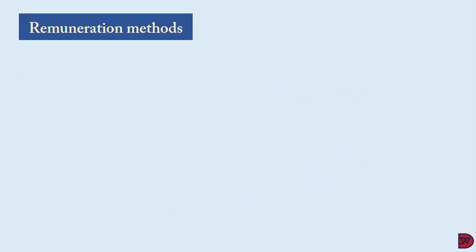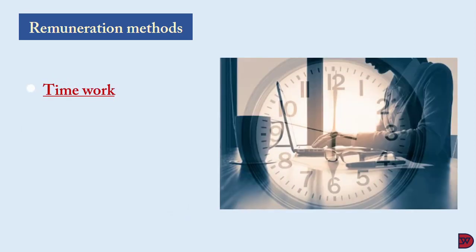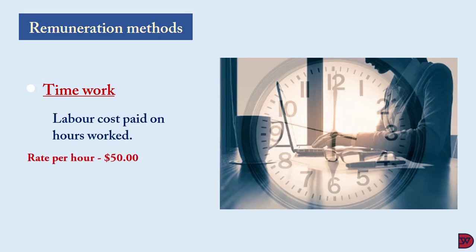There are three basic remuneration systems for labor. The first is time work, where remuneration is paid based on the number of hours worked. Usually a fixed rate per hour is agreed upon. For instance, fifty dollars per hour — so if an employee works eight hours a day, they will be entitled to receive four hundred dollars for that day and two thousand dollars for five days.